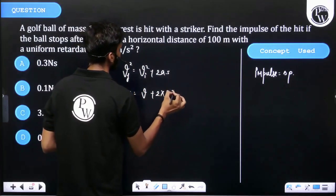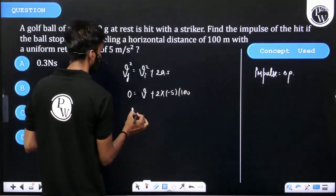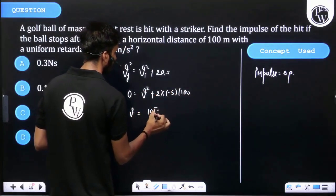Two times acceleration, which is minus 5, times displacement of 100 meters. That equals V initial equals 10√10 m/s.